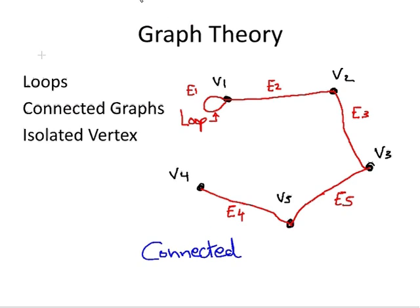Lastly, an isolated vertex is a vertex where there are no edges incident upon that vertex. For example, we have v6 here with no edges. This vertex is described as an isolated vertex. And that concludes our presentation.